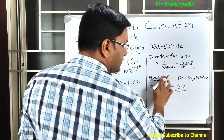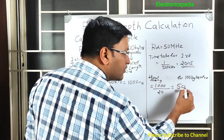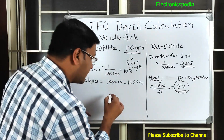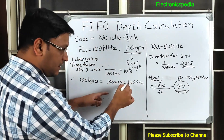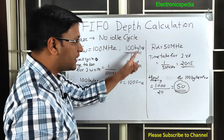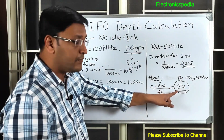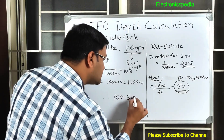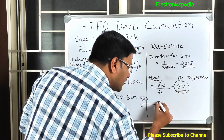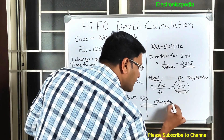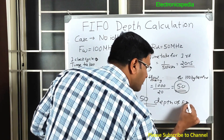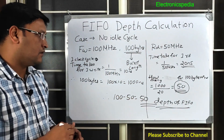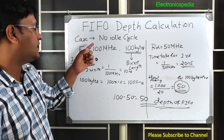In 1000 nanoseconds you are writing 100 bytes, but in that same 1000 nanoseconds you are reading only 50 bytes. Therefore the required FIFO depth = 100 − 50 = 50. That is the depth of the FIFO for Case 1.